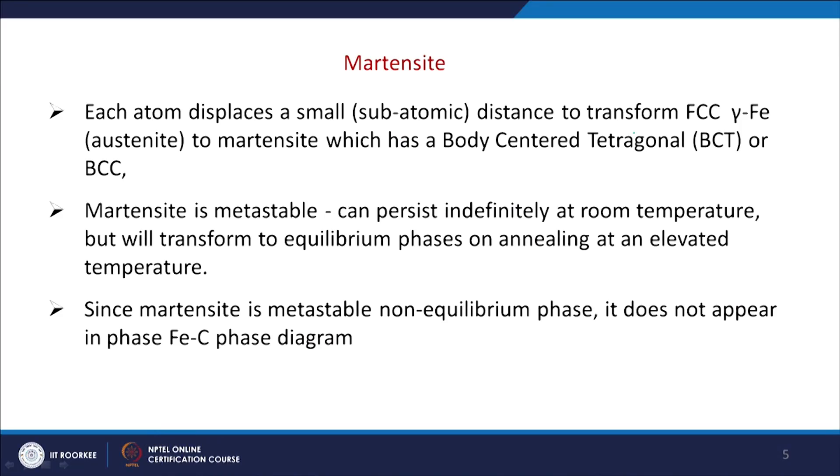When martensite forms, each atom displaces a small sub-atomic distance to transform FCC gamma to martensite, which has a body-centered tetragonal (BCT) structure — or BCC; it can be both. If carbon is trapped while transforming, you get BCT; if not, you get BCC. The martensite transformation involves only very small changes in atomic positions because during very fast cooling you do not have time for long-range diffusion.